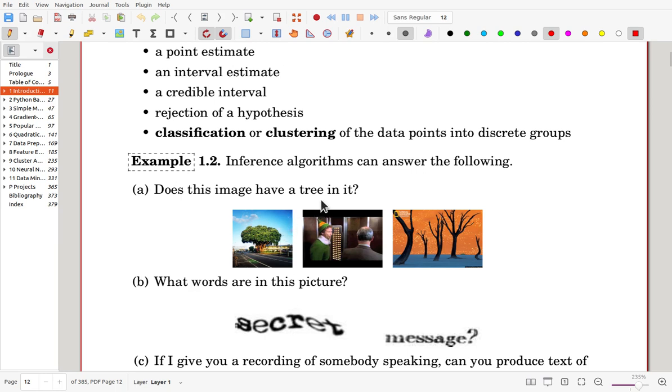you learn algorithms making such inference algorithms. Then inference algorithms will take data and make a decision. Does this image have a tree in it? Then, good inference algorithms will say, yes. Here for this one, no. And, yes. And also,